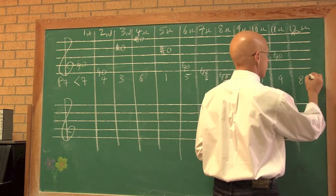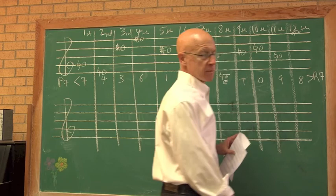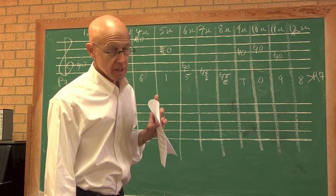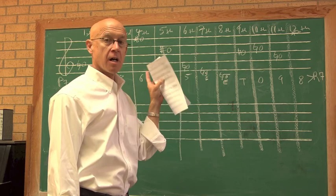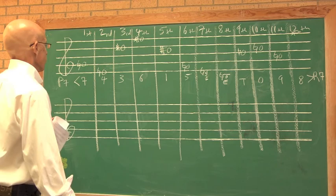If you play this same row backwards, that's R for retrograde. And we name the retrograde after the first pitch class of prime. So R7 means we have the retrograde of a prime form of a row that starts on G.